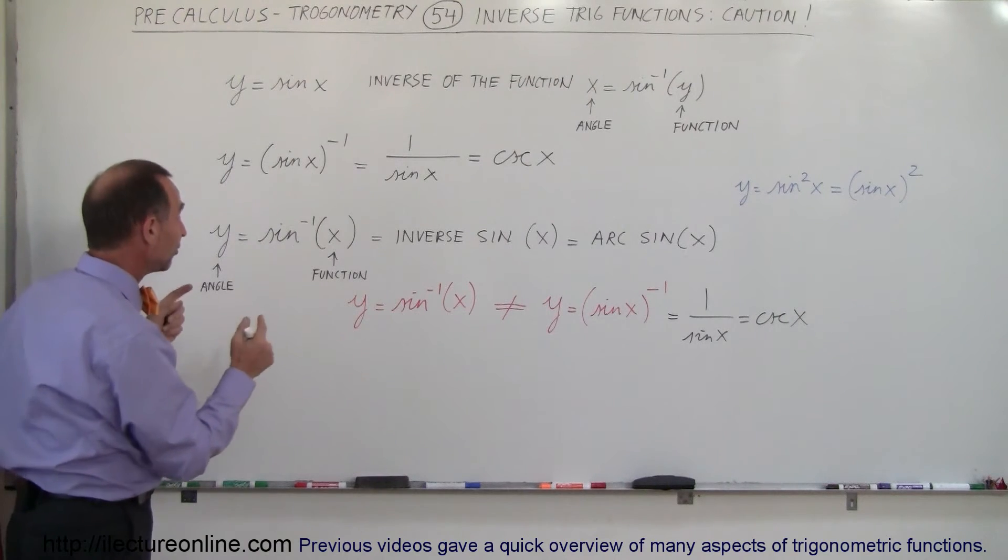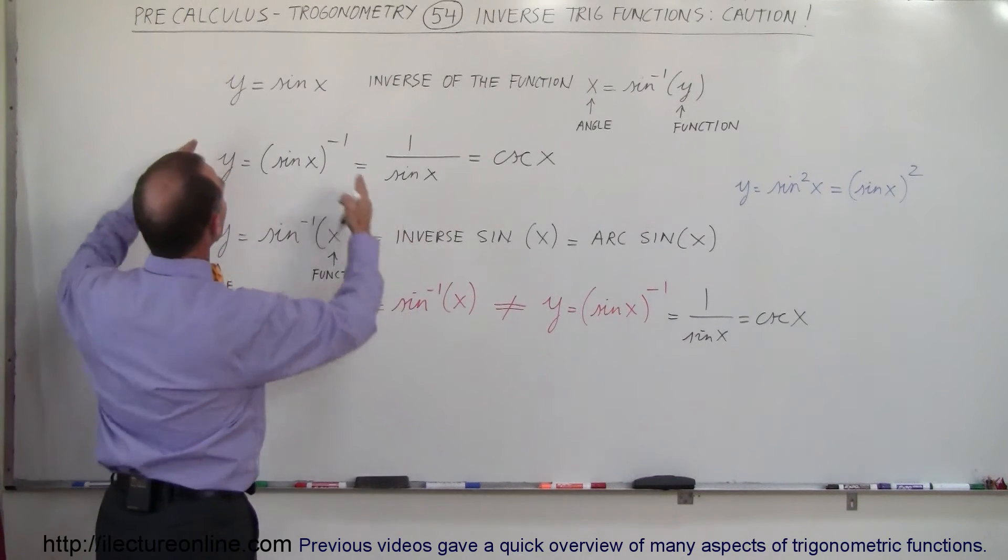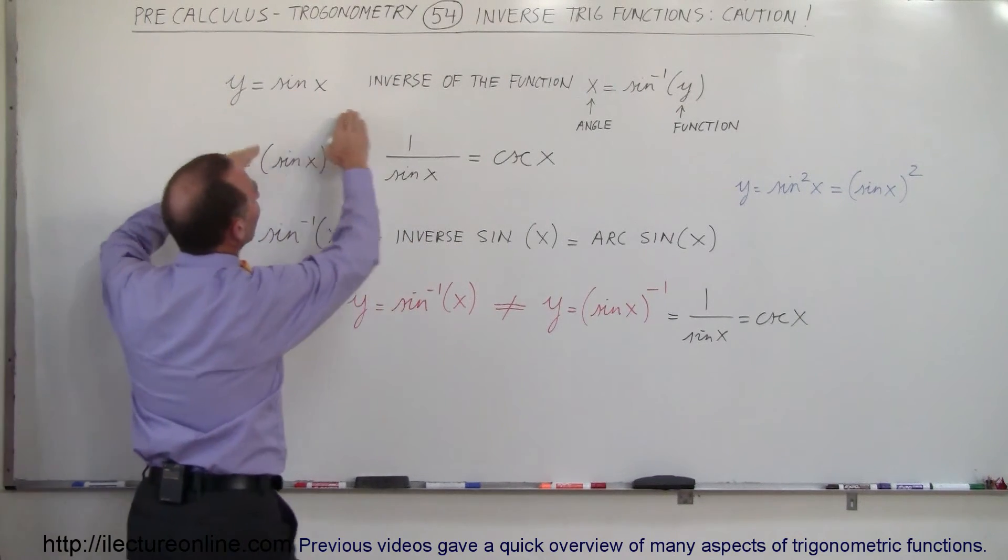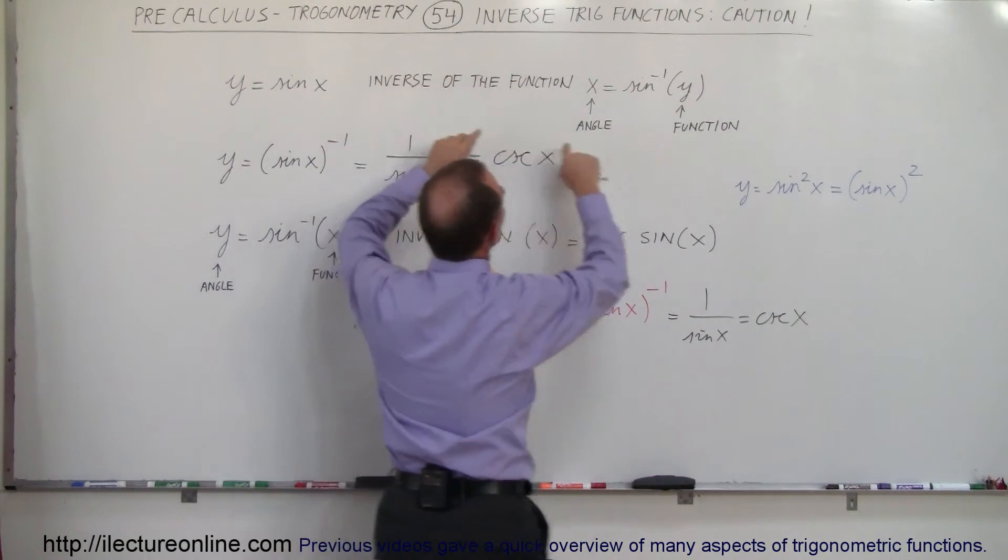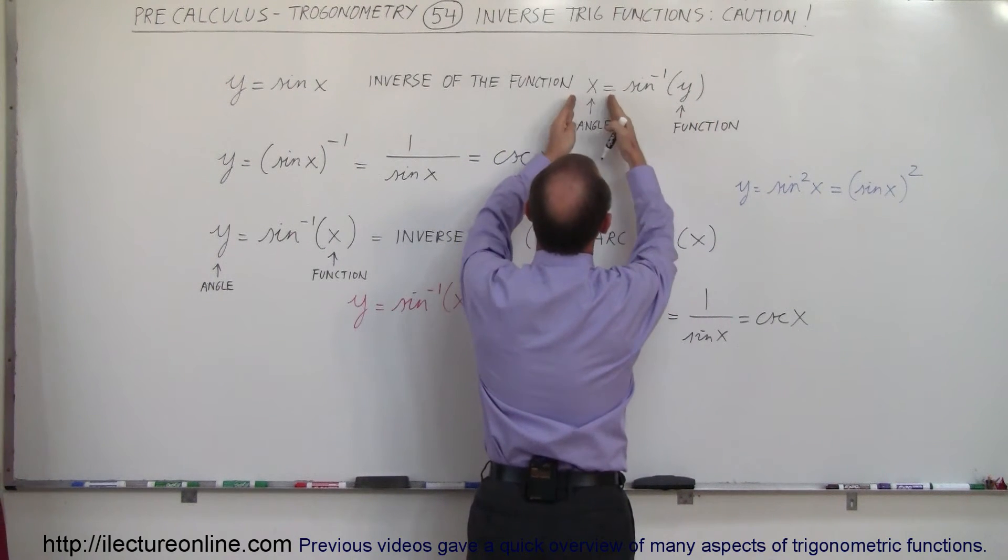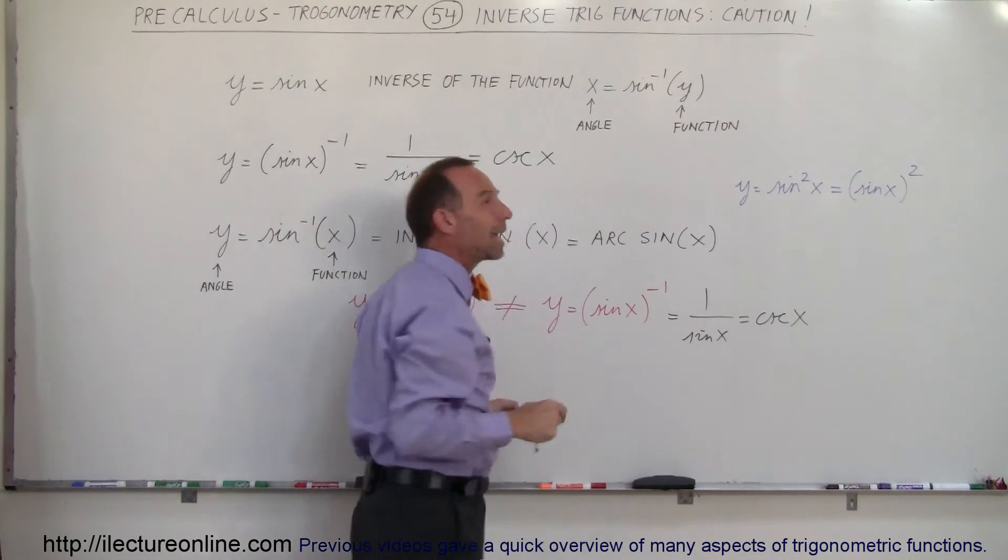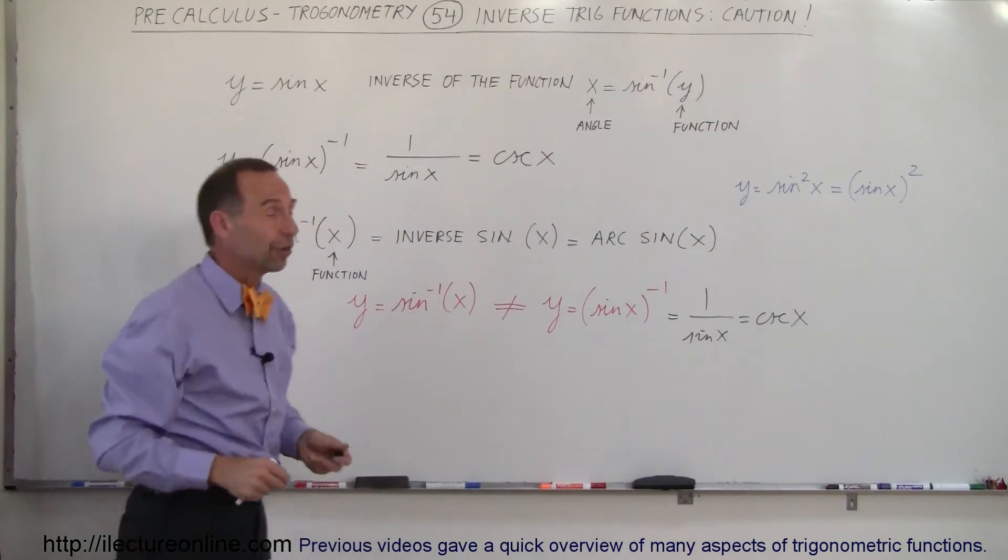What the inverse sine of x does is interchange the function and the angle. Now here you can see it clearly. We have y equals the sine of x and when we take the inverse of the function, x is equal to the inverse sine of y. So there's the angle and there's the function. If I give you the value of the function, I will then look for what the angle is that will give you that value of the function.